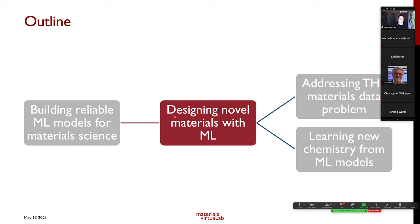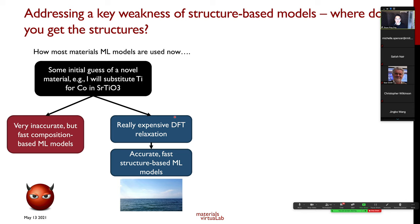Given that we can build high-accuracy ML models, how do we use them to design new materials? Almost all high-accuracy ML models are structure-based — the crystal structure is an input. There are also composition-based models, where you predict a property like band gap from the composition alone (e.g., Fe₂O₃), without accounting for polymorphs. This can be quite fatal — consider carbon: graphite is a black soft solid and diamond is a very hard transparent material.